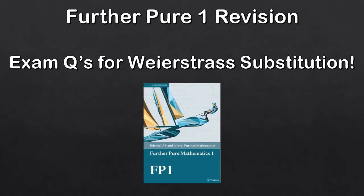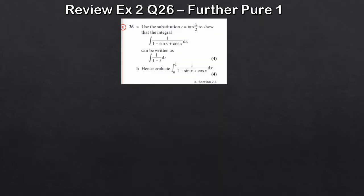Hey guys, welcome to another Further Pure 1 revision video. Today we're taking a look at the Weierstrass substitution. This is quite a nice little topic which covers some sometimes tricky integrals which we may not be able to compute using our standard results. It basically uses t-substitutions to substitute and then compute the integral. There are only two questions in this video - it's quite a small topic within Chapter 7, but these two questions should cover all bases.